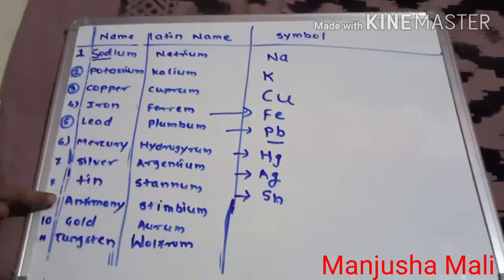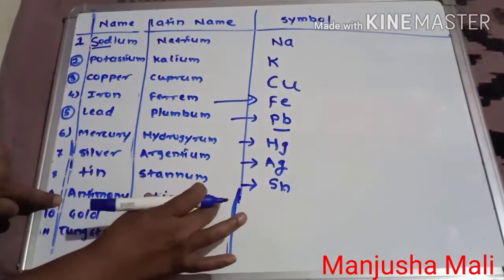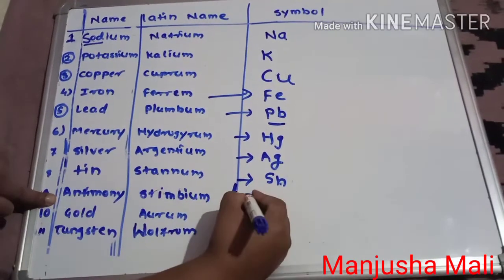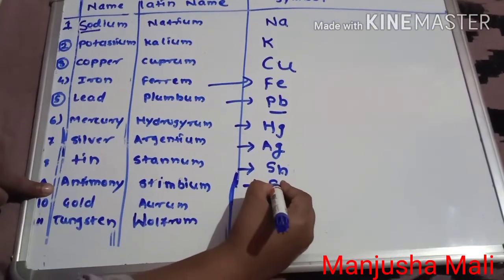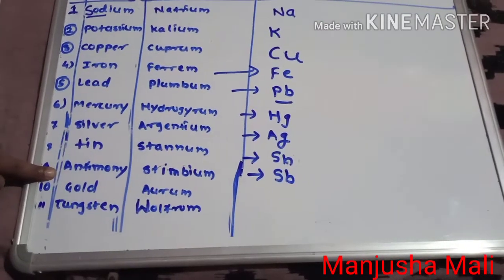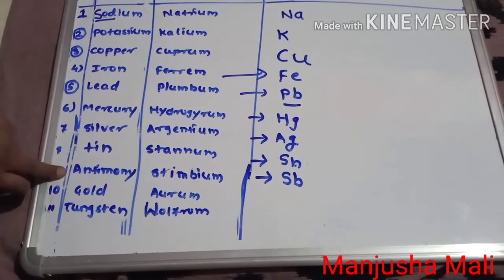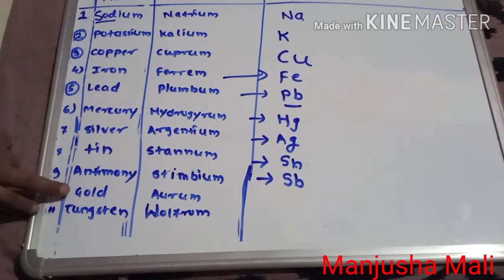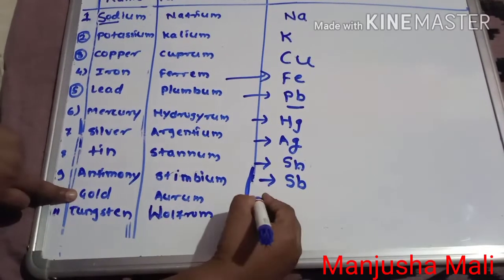Antimony. Antimony's Latin name is Stibium. Latin name is Stibium, symbol is Sb.